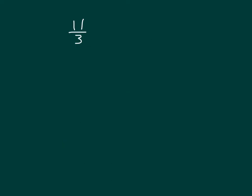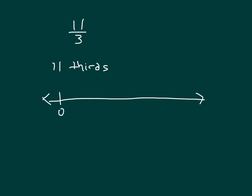Let's look at another problem: we have 11 thirds. Let's write that out and draw a picture. We have 0 and 1; if we divide this into thirds we have 1 third, 2 thirds, and 3 thirds which equals 1. We're not at 11 thirds yet, so we extend to whole numbers 0, 1, and 2, dividing each section into thirds: 1 third, 2 thirds, 3 thirds equals 1, so 4 thirds, 5 thirds, and 2 equals 6 thirds.